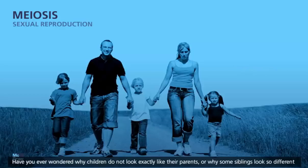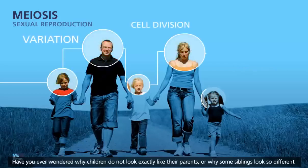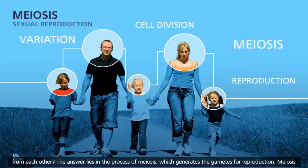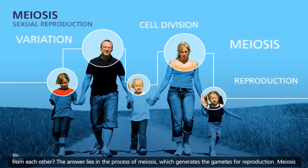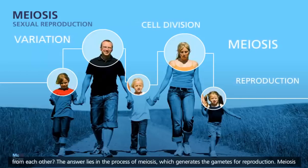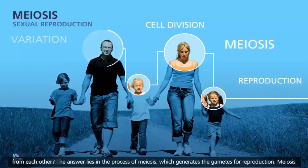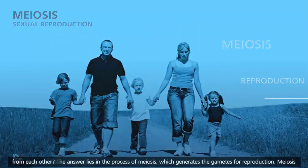Have you ever wondered why children do not look exactly like their parents, or why some siblings look so different from each other? The answer lies in the process of meiosis, which generates the gametes for reproduction.